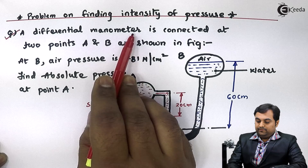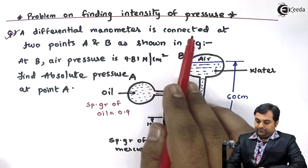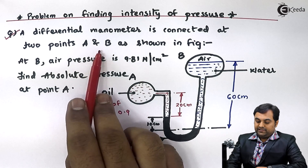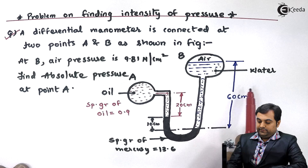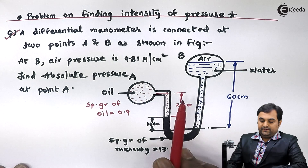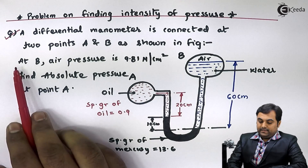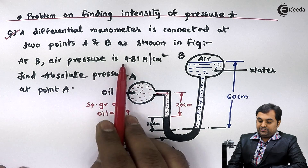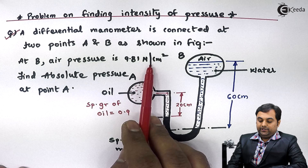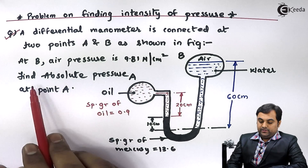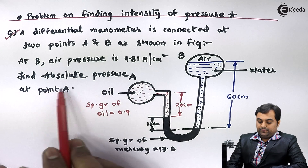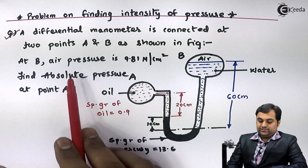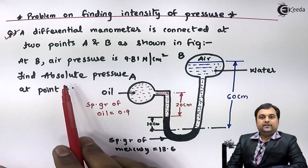A differential manometer is connected at two points A and B as shown in the figure. At point B the air pressure is 9.81 Newton per centimeter square. Find the absolute pressure at point A.